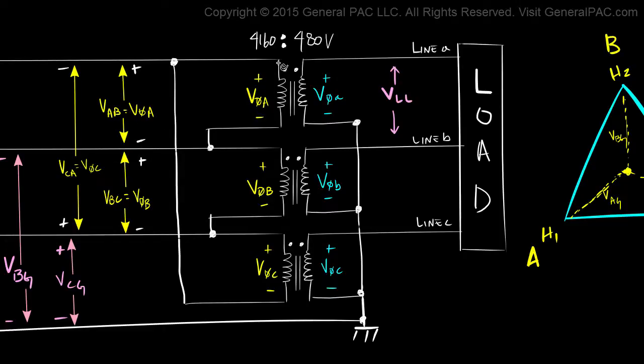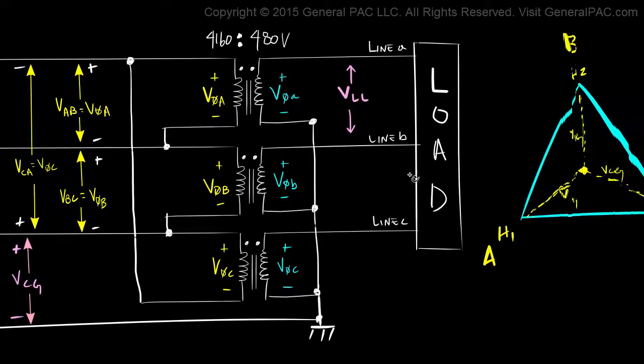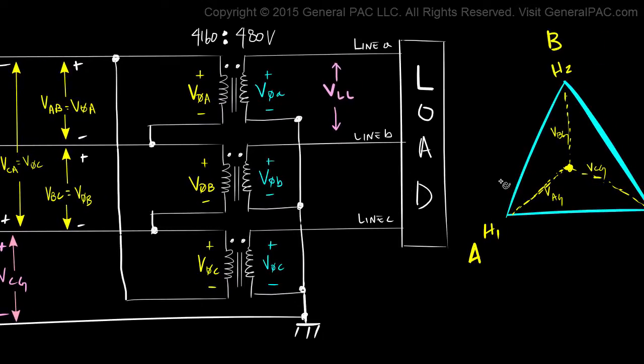Which is the voltage across winding A. So we immediately know that this line here represents VAB.